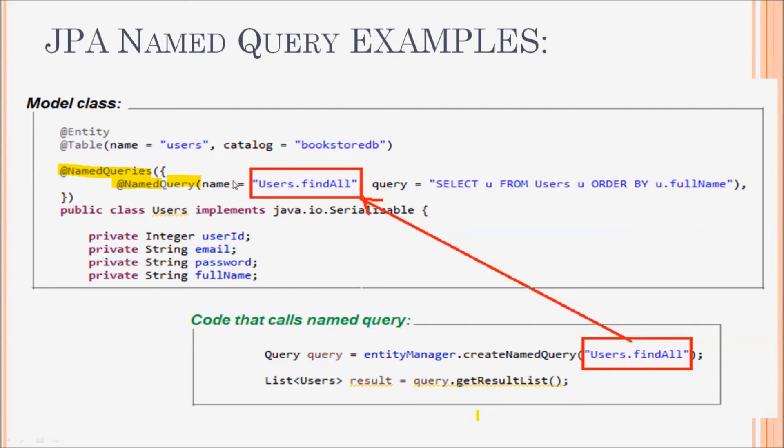You can see the annotation here. This is the content of the query, you see JPQL. And this is the name of the query, User.findAll. You can use any name.